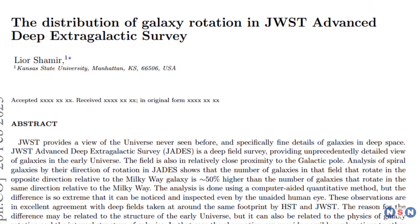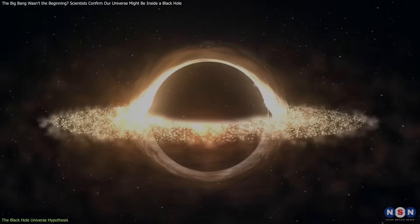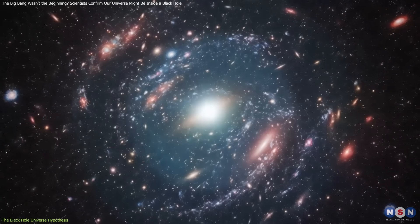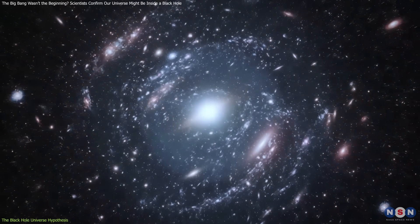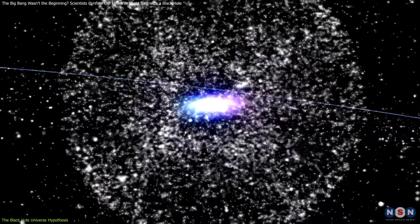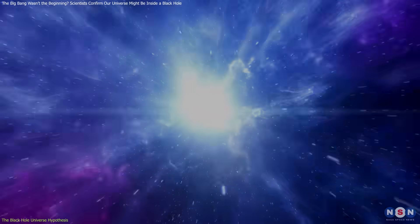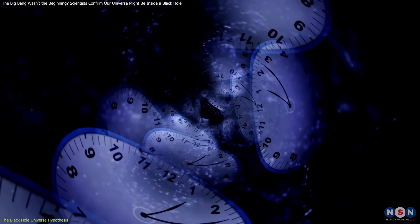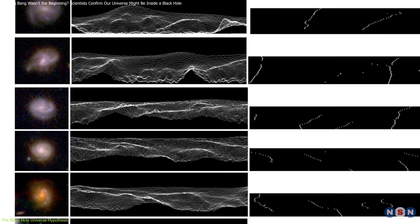One of the most intriguing explanations for these findings is rooted in a decades-old idea known as black hole cosmology. This model proposes that our universe may exist inside the event horizon of a massive black hole in a larger, parent universe. In this framework, the Big Bang wasn't a singular creation event. Instead, it could have been a gravitational collapse followed by a bounce, a process where matter collapses into a rebound under extreme quantum and relativistic effects, forming a new, expanding space-time region.